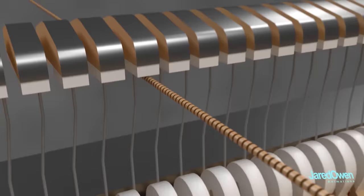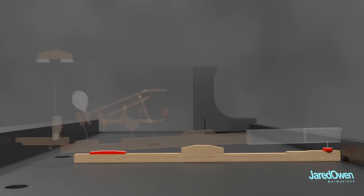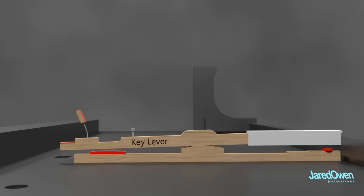The motion of the hammer involves a chain reaction. Let's take a look at just one of the keys. This mechanism is referred to as the piano action. Let's break this down piece by piece. Pressing the key causes the lever to go up and down, just like a seesaw.